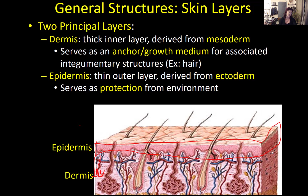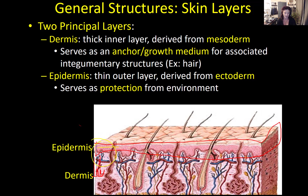The integument of vertebrates has two principal layers. There's a deeper layer called the dermis — a thick inner layer derived from the mesoderm, unlike the epidermis which is derived from the ectoderm. The dermis serves as both an anchor and a growth medium for any structures associated with the integument. For example, skin and feathers are both anchored deep in the dermis and then grow up through the epidermal layer and out onto the surface of the skin.